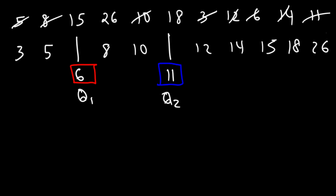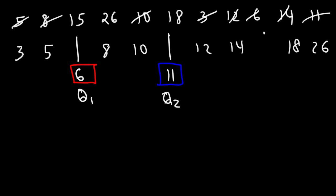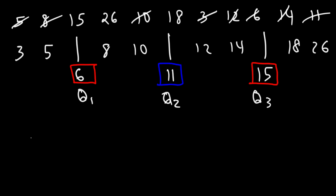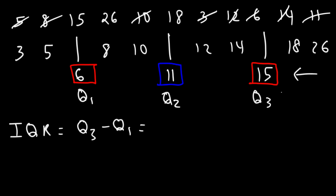Now let's do the same thing on the right side and identify the median. The middle number is 15, so 15 is the third quartile. When you think of the word quartile, I think of quarters — four quarters equal a dollar. And so the quartiles divide the data into four equal parts. Now we can calculate the IQR: it's the difference between the third quartile and the first quartile. So 15 minus 6 gives us 9. And that's how you calculate the interquartile range.